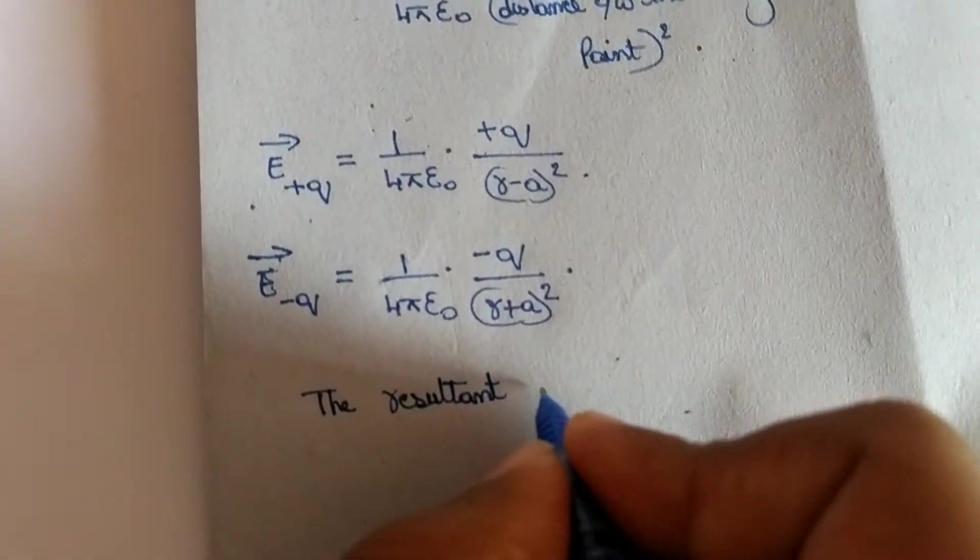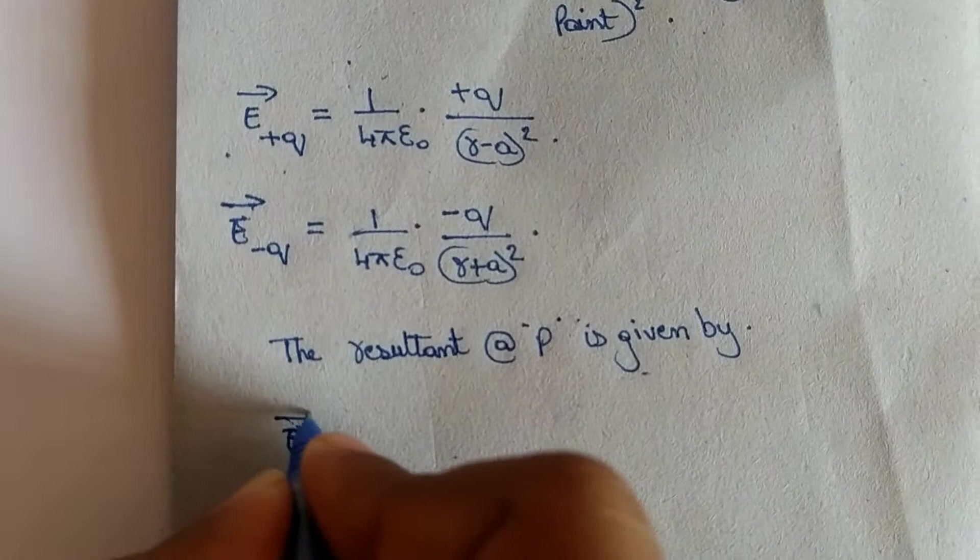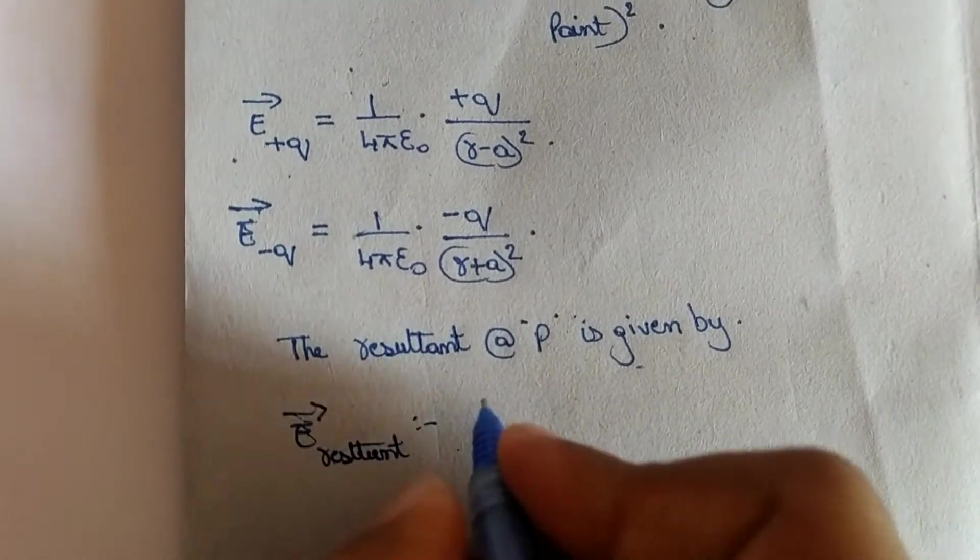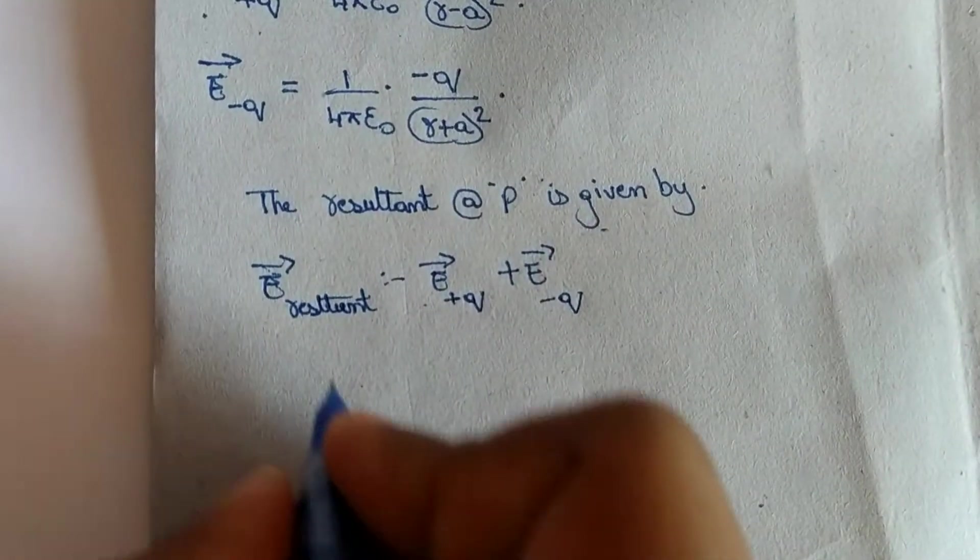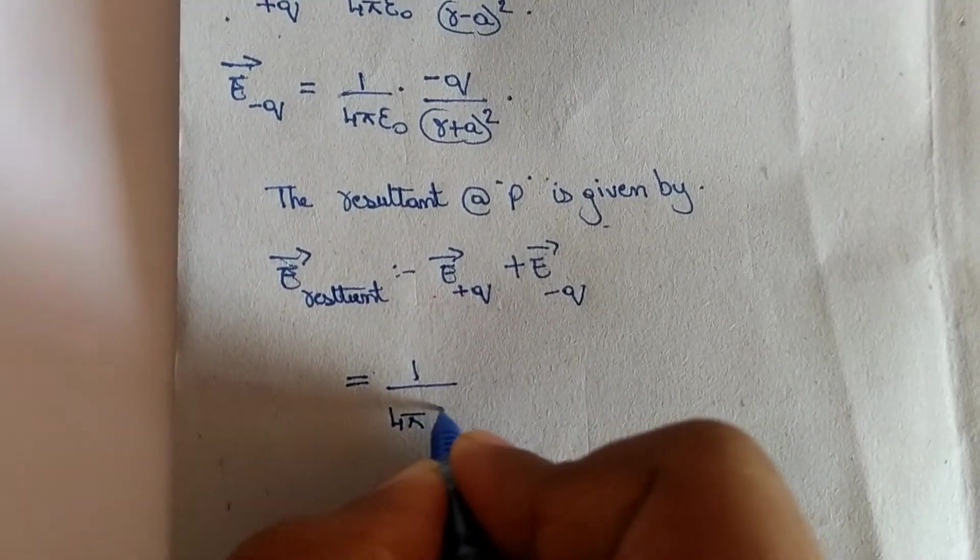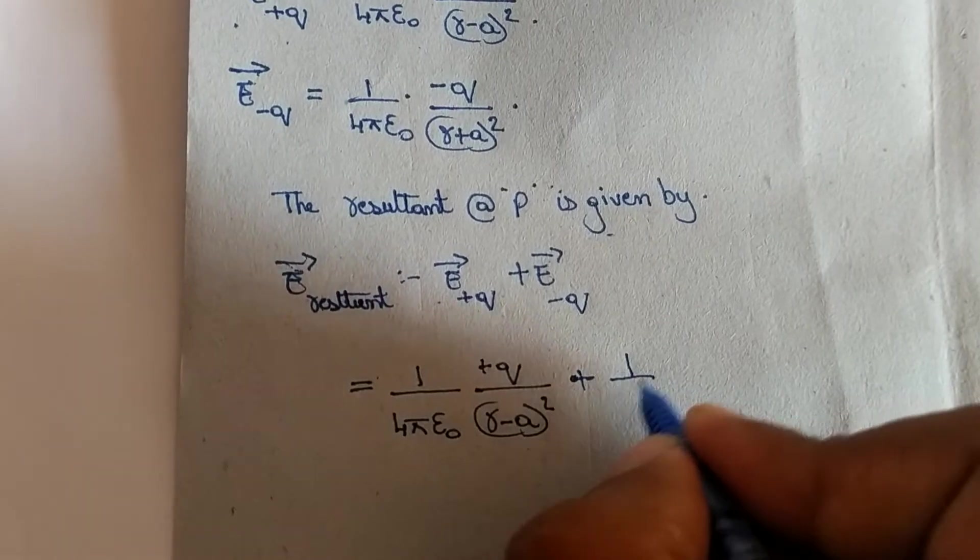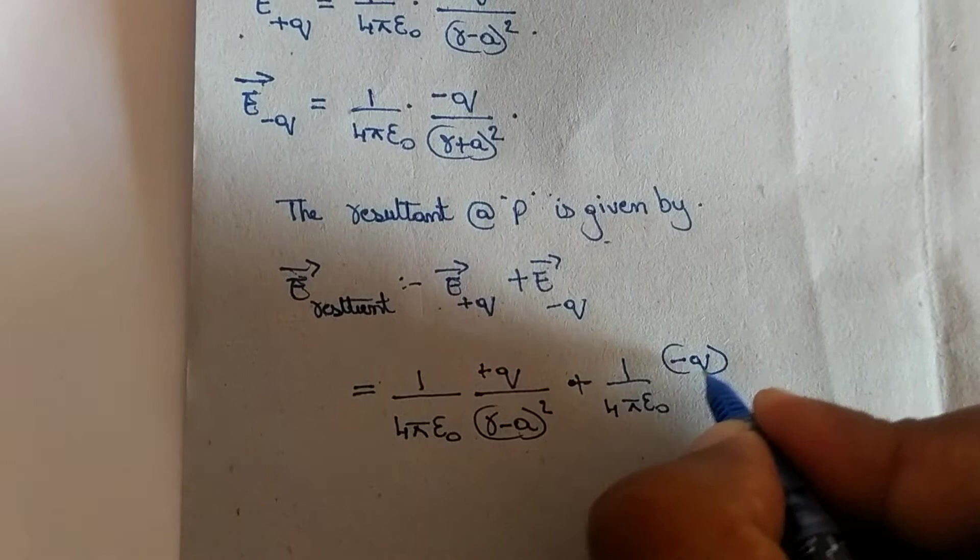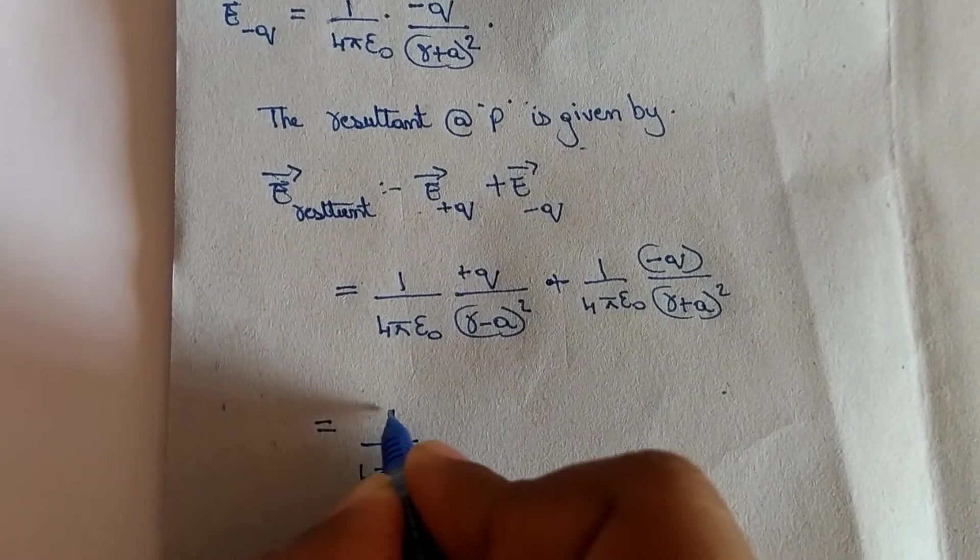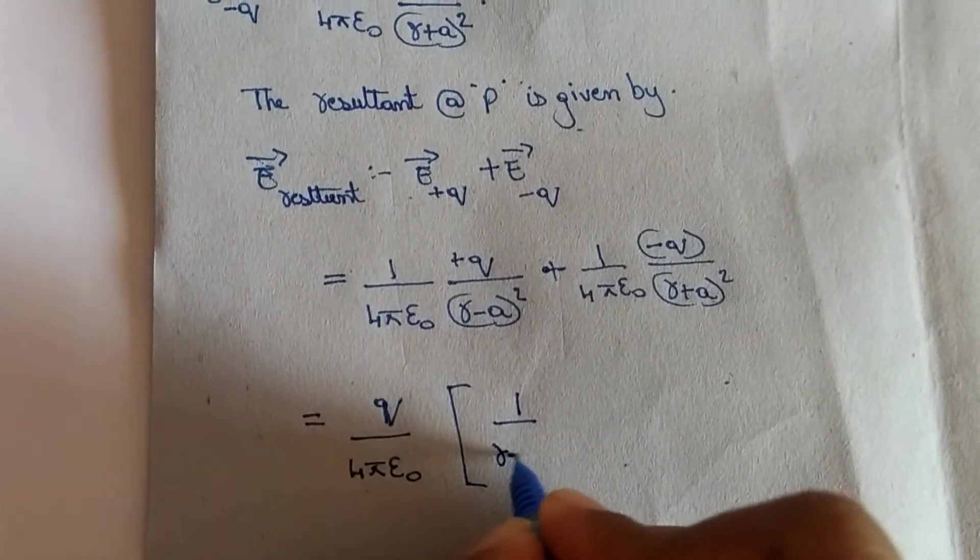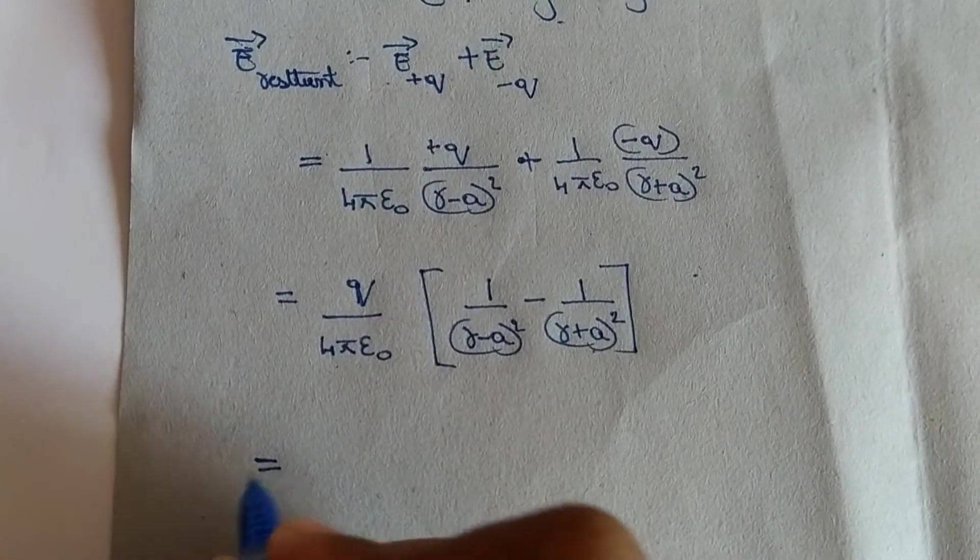The resultant that you get at P is given by E resultant, which is the summation. 1 by 4 pi epsilon 0, Q divided by r minus a whole square plus 1 by 4 pi epsilon 0 minus Q, r plus a whole square. Let us take 1 by 4 pi epsilon 0 and Q as common.